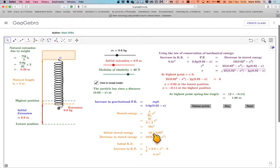The initial stored energy will be that, which is 0.92 times 10 times 0.92 squared. The decrease in stored energy will be 10 times 0.92 squared minus x. The initial kinetic energy is 0. The increase in kinetic energy will be a half times 0.8 times V squared minus 0, which gives 0.4 V squared.